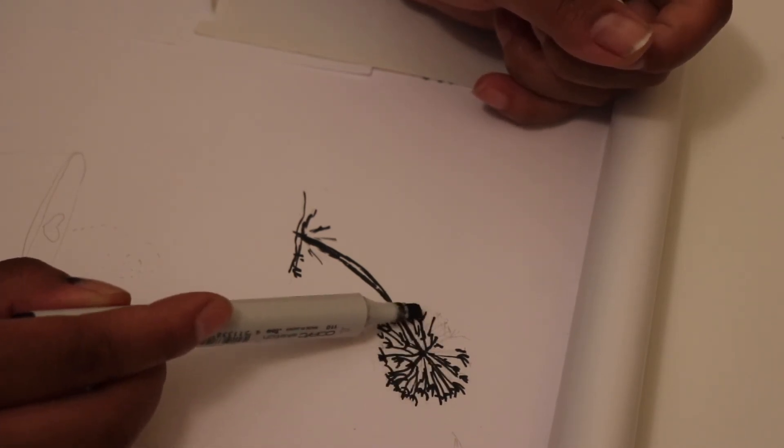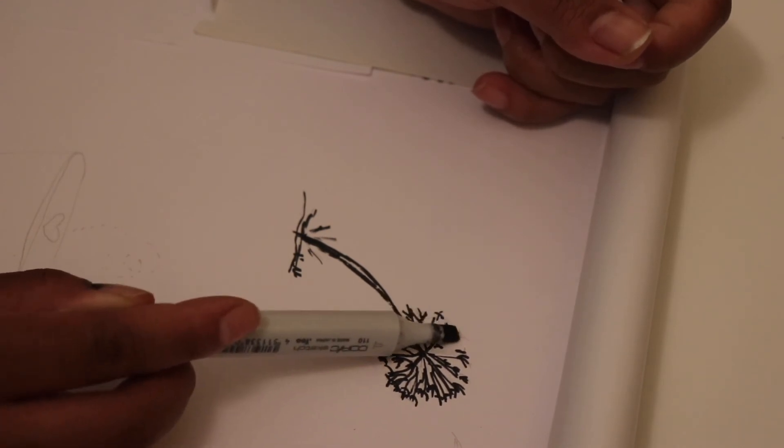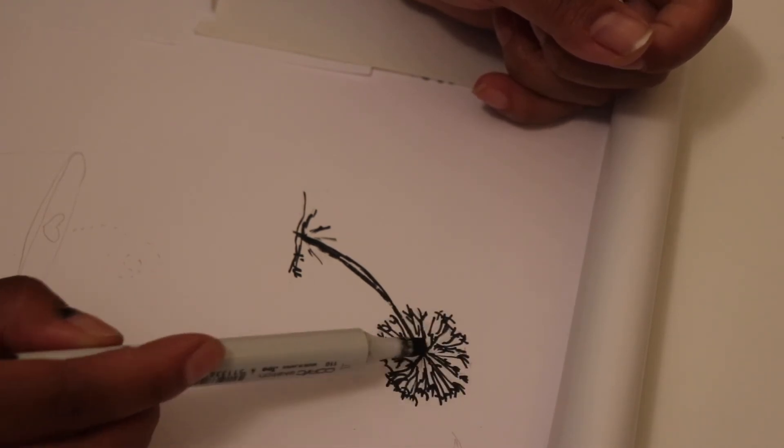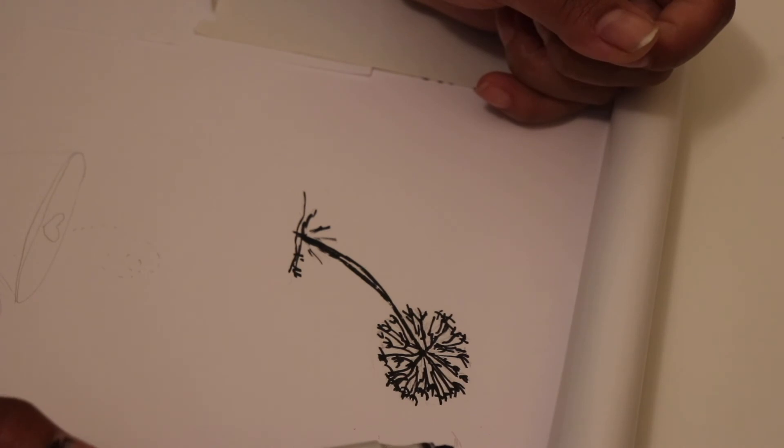You see, it's starting to become a wish flower. Like I said, it's much better if you just use a pencil. But for the sake of the video, I want to show you how to do it with the marker. And your flower should look like this.